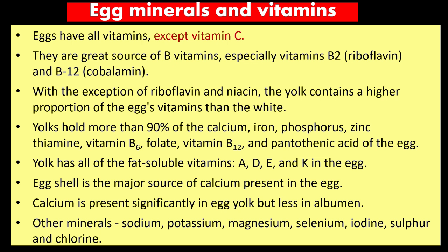Eggs have all vitamins except vitamin C, and are a great source of B vitamins, especially vitamin B2 (riboflavin) and cyanocobalamin (B12). Yolks hold more than 90% of the calcium, iron, phosphorus, zinc, thiamine, vitamin B6, folate, vitamin B12, and pantothenic acid of the egg. The yolk has all fat-soluble vitamins A, D, E, and K. Egg shell is a major source of calcium. Other minerals — sodium, potassium, magnesium, selenium, iodine, sulfur, and chlorine — are also present.